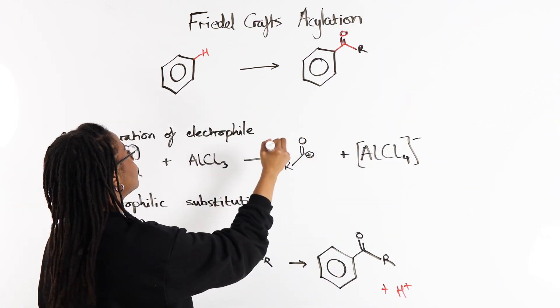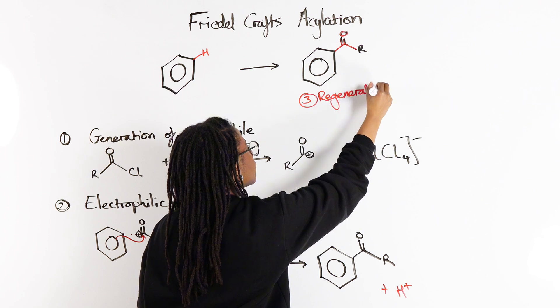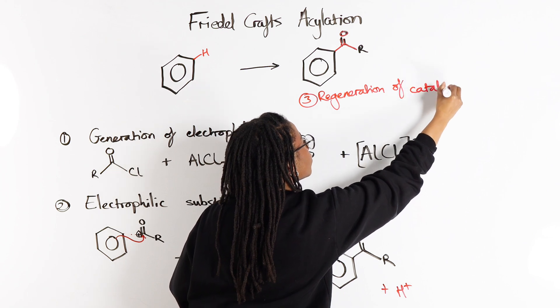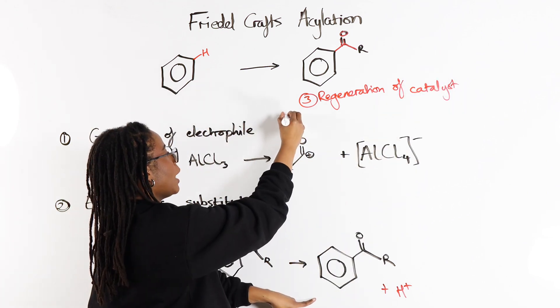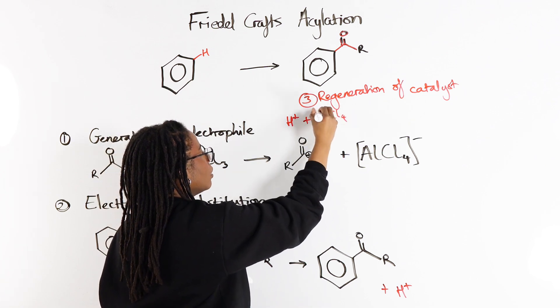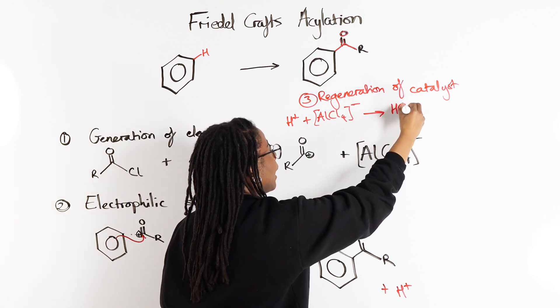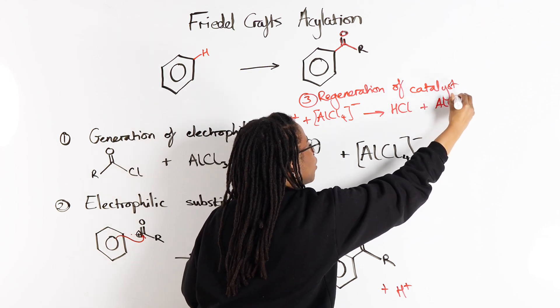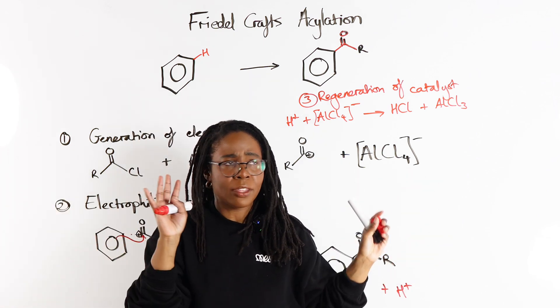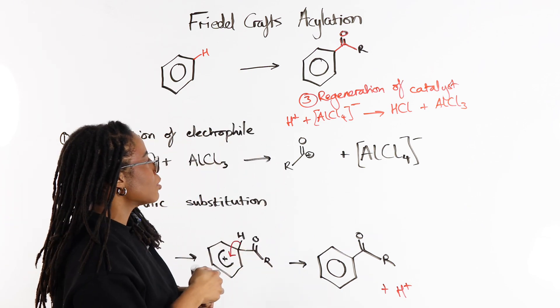Our final step is the regeneration of the catalyst where we have our H plus reacting with our AlCl4 minus. And then we are going to get HCl and regenerate our catalyst of AlCl3, which can then go on and react again with another acyl chloride. So then that electrophile can react with the benzene ring and so on and so forth.